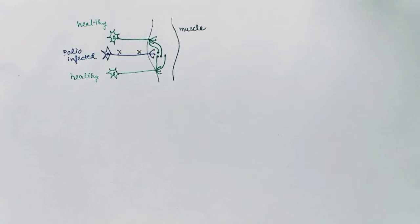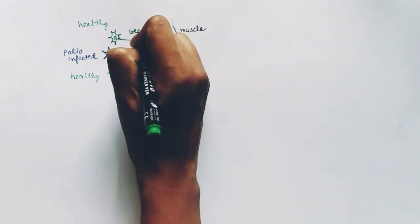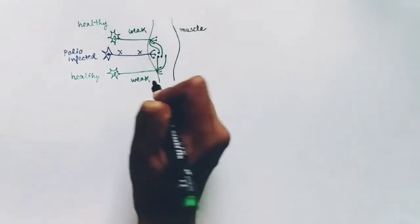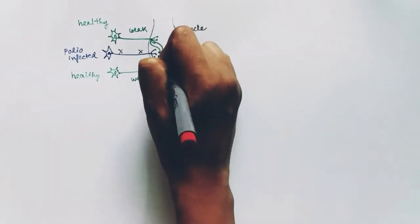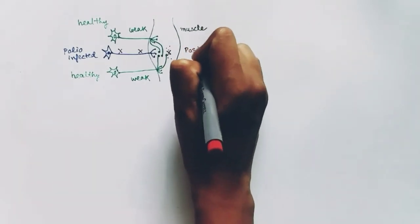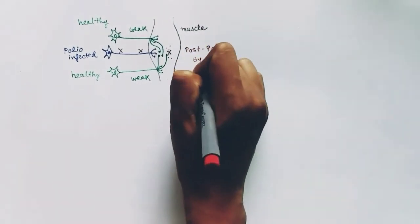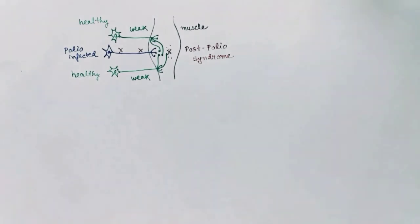So the muscle which was supposed to be paralyzed is getting the signal from the helping healthy motor neurons. Now, over time the natural process of aging causes the motor neurons to die. When the healthy motor neurons die which were helping the polio-infected muscle, the muscle will again show the polio symptoms in old age because the healthy helping motor neurons are not capable of helping anymore.